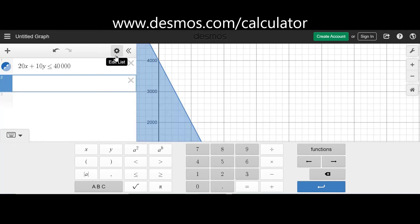And then we have 15x plus 30y is less than or equal to 60,000.